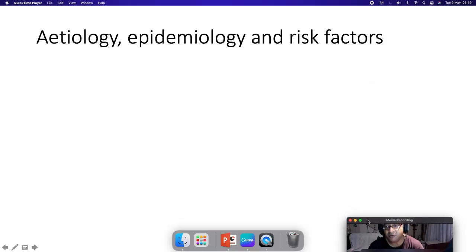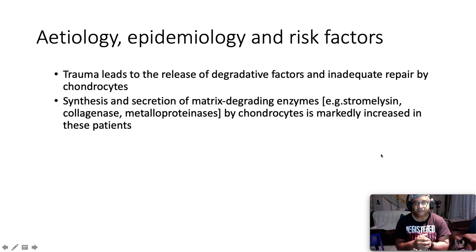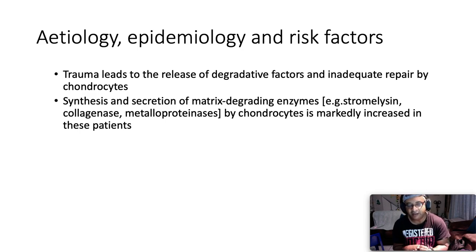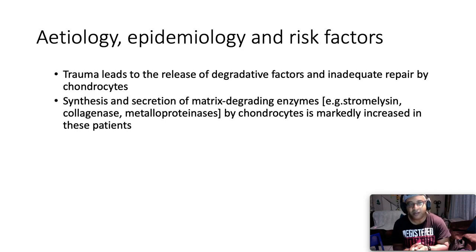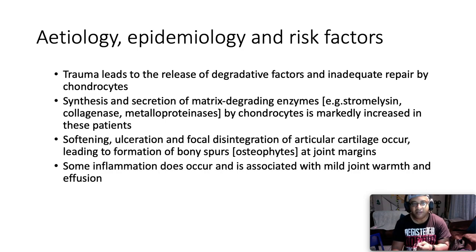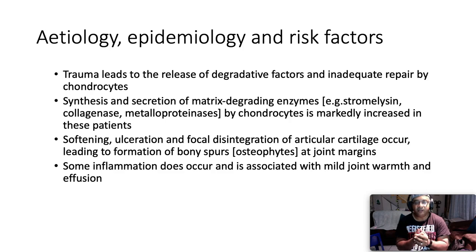Looking at etiology and risk factors, trauma leads to the release of degradative factors and inadequate repair by the chondrocytes. Afterwards, we have synthesis and secretion of matrix-degrading enzymes like stromelysin, collagenase, and metalloproteinases by the chondrocytes, markedly increased among these patients. Then we have softening, ulceration, and focal disintegration of articular cartilage, leading to formation of bony spurs — osteophytes — at the joint margins. Some inflammation does occur, associated with mild joint warmth and effusion, but not to the degree seen in inflammatory arthritides.